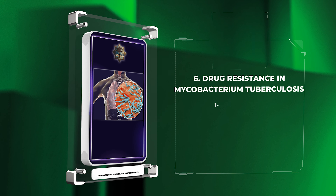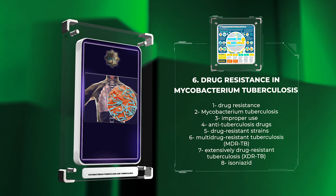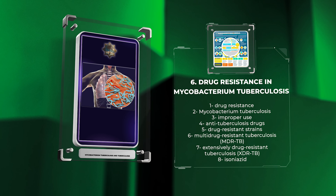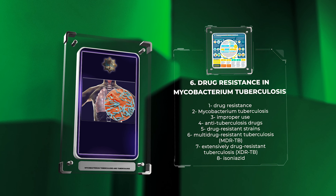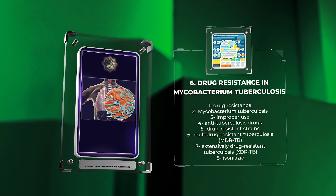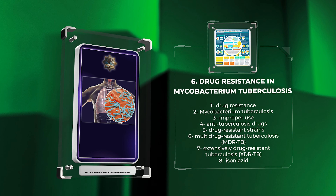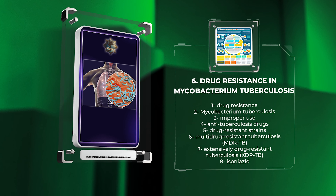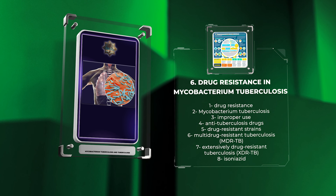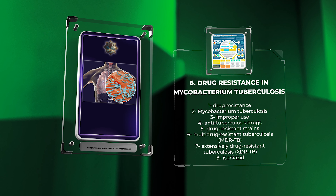In this section, we will discuss drug resistance in Mycobacterium tuberculosis. Improper use of anti-tuberculosis drugs has led to the emergence of drug-resistant strains, such as multi-drug-resistant tuberculosis, MDR-TB, and extensively drug-resistant tuberculosis, XDR-TB. MDR-TB is resistant to isoniazid and rifampicin, while XDR-TB is resistant to additional drugs. Drug resistance complicates the treatment and control of tuberculosis.